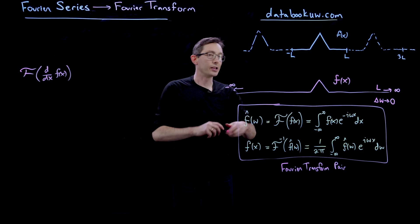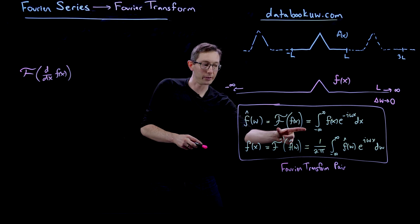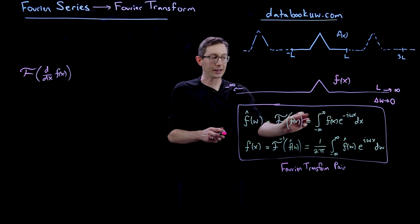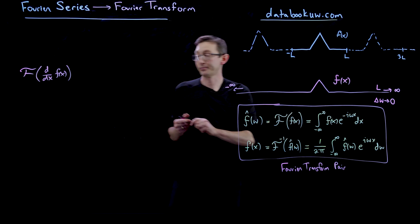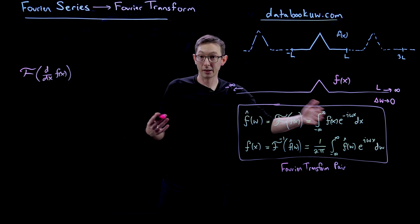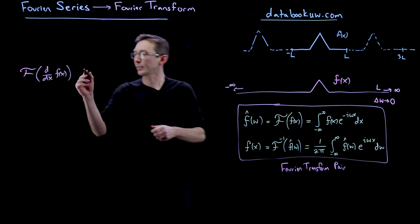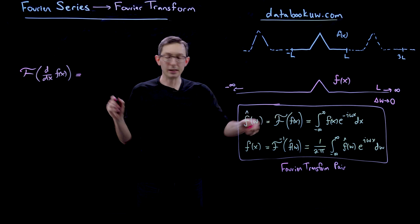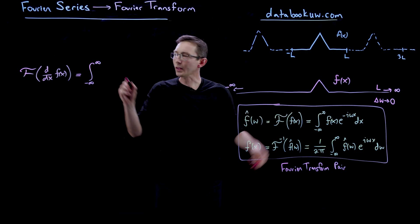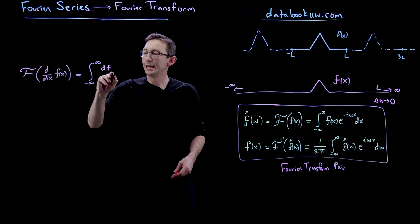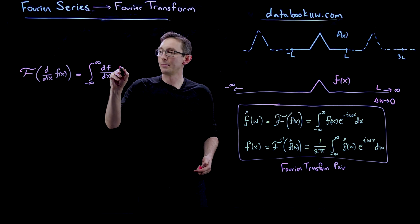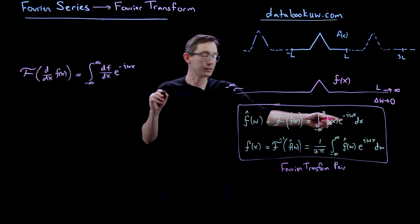What we're going to do is literally take this formula for the Fourier transform — this integral formulation — and replace f of x with d f dx. We'll do some calculus and see what pops out. So this is going to be the integral from negative infinity to infinity of d f dx times e to the minus i omega x dx.